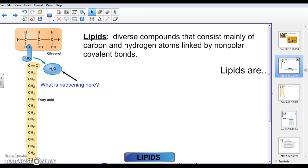Lipids are diverse compounds that consist mainly of carbon and hydrogen atoms linked by non-polar covalent bonds, as you can see from the diagram over here. There's a nice straight hydrocarbon chain here which negates all of these different functional groups.